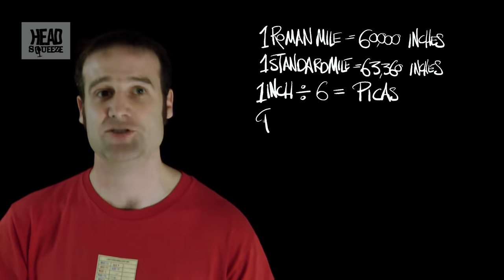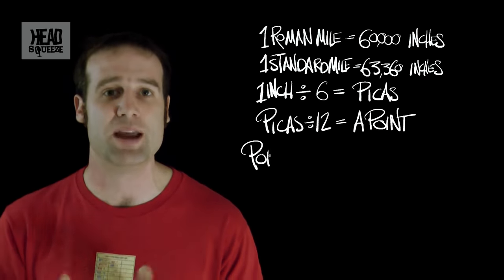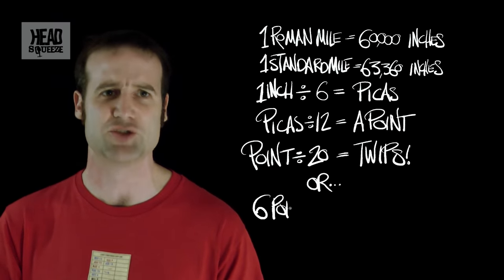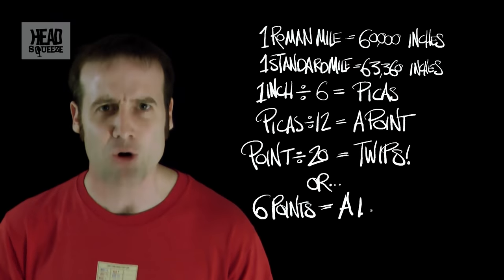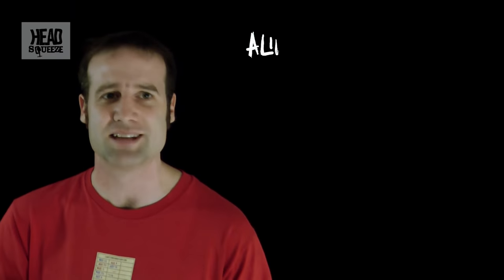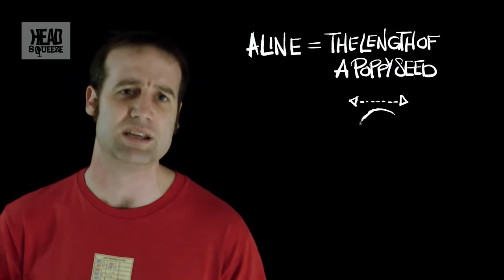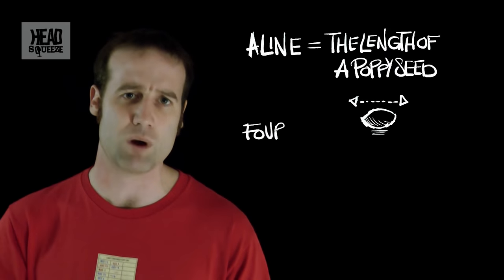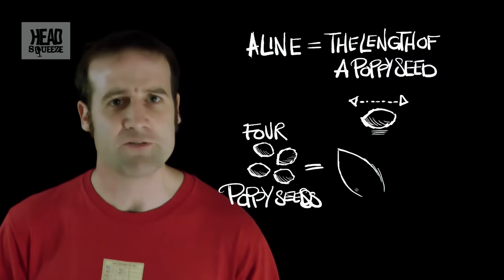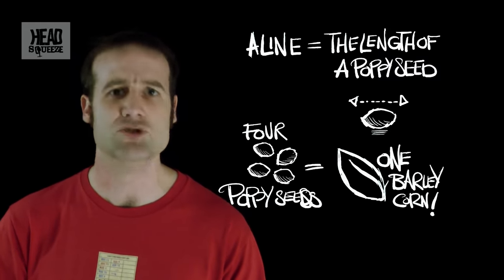While the Roman Mile is exactly 60,000 inches, the Standard Mile is 63,360 inches. Speaking of Inches, if you take an Inch and divide it into sixths, you get Pickers. If you take a Picker and divide it into twentieths, you get a Point. If you take a Point and divide it into twentieths, you get twerps. Or alternatively, if you take six Points, you get a Line. A Line is exactly the same length as a Poppy Seed. And if you take four Poppy Seeds, you're right back where we started — four Poppy Seeds equals one Barleycorn. What a fantastically logical and consistent system of units.